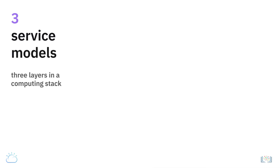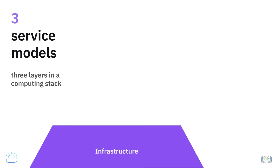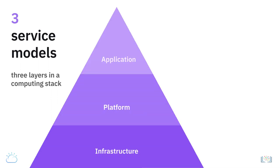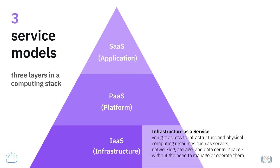Now let's look at the three service models that are based on the three layers in a computing stack: infrastructure, platform, and applications. These cloud computing models are aptly referred to as Infrastructure as a Service (IaaS), Platform as a Service (PaaS), and Software as a Service (SaaS).